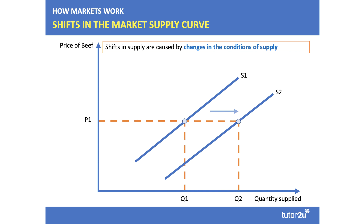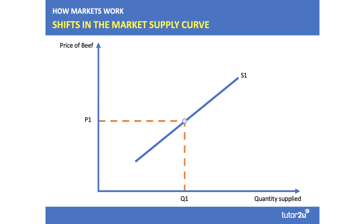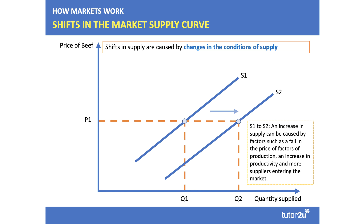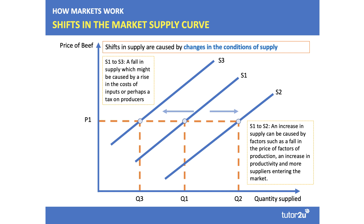Shifts in supply are caused by changes in the conditions of supply. As the price goes up, there's an expansion up the supply curve; as the price goes down, there's a contraction down the supply curve — producers responding to changes in the price. S1 has shifted outwards to S2; we call that an increase in supply. That can be caused by a fall in the cost of production, rise in productivity, or more suppliers entering the market. An inward shift from S1 to S3 — a fall in supply — means that at the same price level P1, less can be supplied. Causes include an increase in unit costs of production or a government tax on producers.